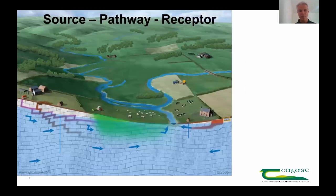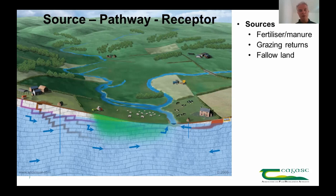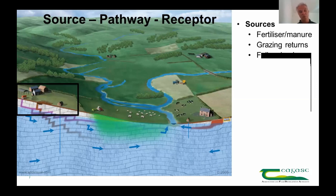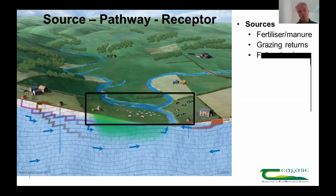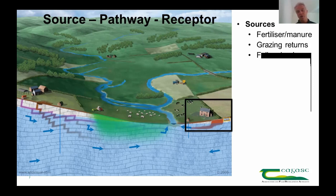What contributes to nitrate loss to water? I'd like to take you through the source-pathway-receptor model often used in water quality. Sources of nitrogen include fertilizer, manure, and grazing. These can occur as point sources — such as leaking slurry stores or oil tanks — or as diffuse sources from larger areas such as grazed grasslands where grazing returns, nitrogen fertilizer, and manure management are potential nitrogen sources. Non-agricultural point sources include septic tanks from houses discharging higher levels of nitrogen to water.